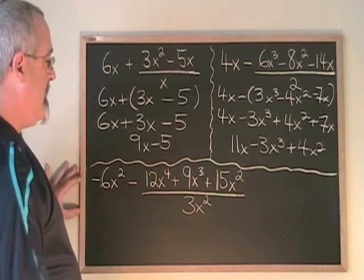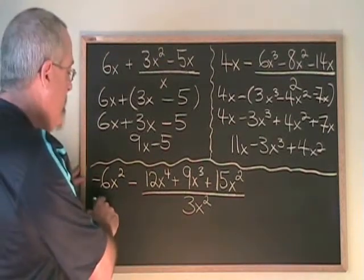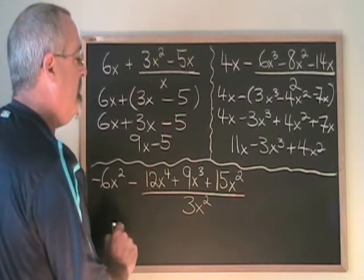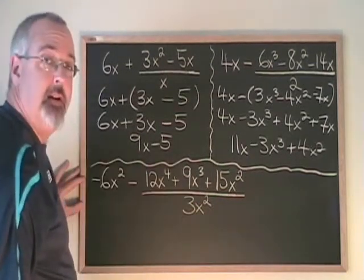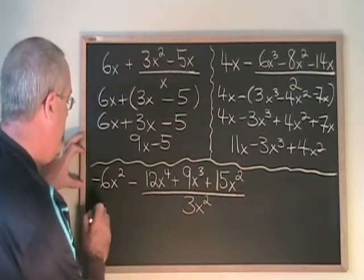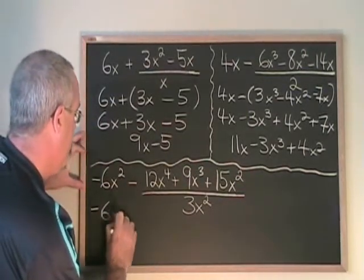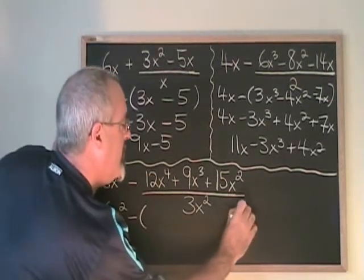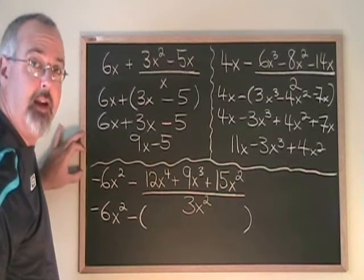In this example, I have negative 6x squared minus a giant fraction, which is 12x to the 4 plus 9x cubed plus 15x squared, all being divided by 3x squared. I'll write my minus 6x squared and this minus sign, and then put a big bracket big enough to contain the answer to the division.